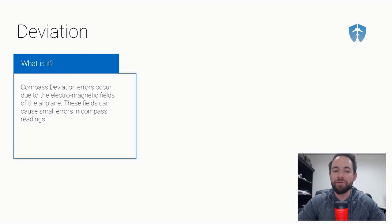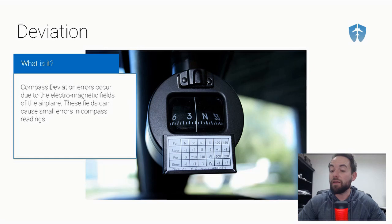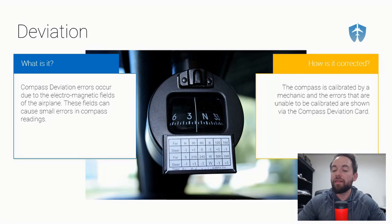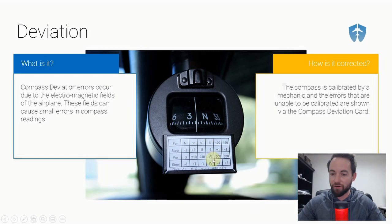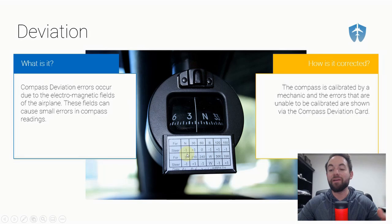Deviation is our next error. Compass deviation occurs due to the electromagnetic fields of the airplane, which can cause small errors in compass readings. To correct for it, the compass is calibrated by a mechanic, and the errors that cannot be calibrated are then published on the compass deviation card — which you can see in this picture. The mechanics try to calibrate it correctly, and whatever they're unable to calibrate, they document on that card.